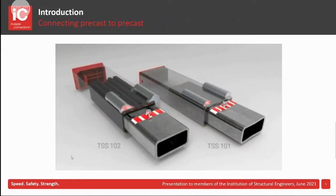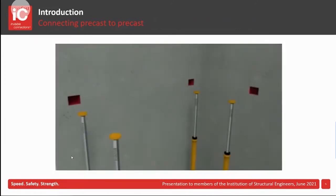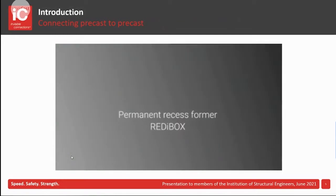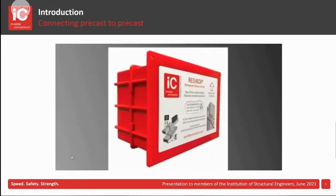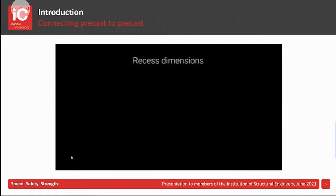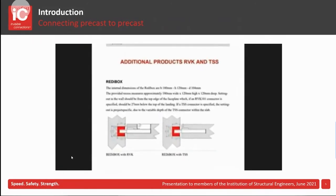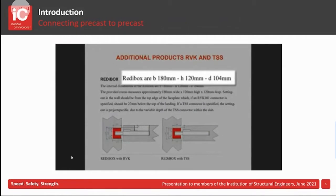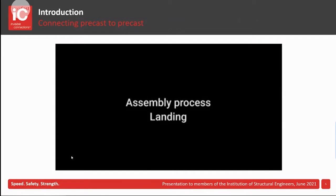These are our TSS connectors. They're a high-grade rolled hollow section that sits within another rolled hollow section and they slide in and out, hence the telescopic name. They're cast into the landing by the precaster. Recess formers — our Ready Box permanent recess formers, manufactured from recycled HDPE so they're environmentally friendly and can be recycled again — are cast into the core wall by the frame contractor. They offer plus or minus 35 millimetres in tolerance, so plenty of site tolerance, but there does need to be coordination between the frame contractor and the precaster to make sure the TSSs line up with the Ready Boxes when the landing arrives.